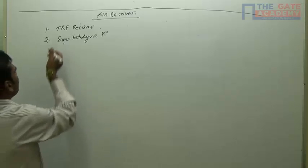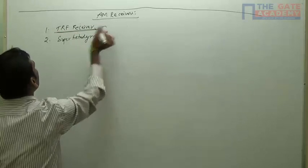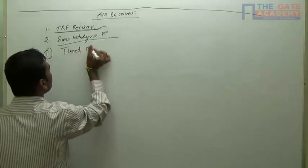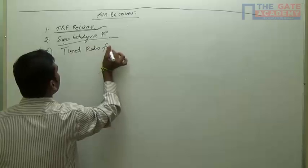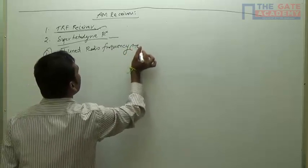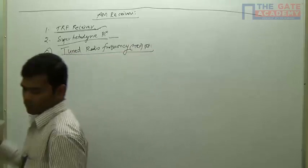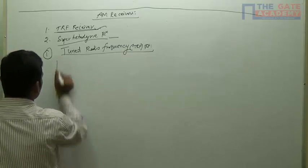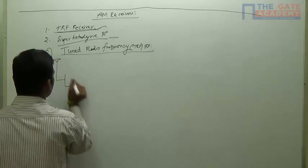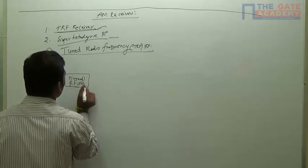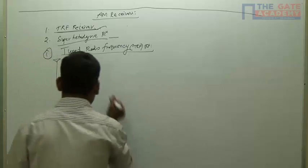We will see one by one. The first one - TRF, tuned radio frequency receiver. The first one: RF amplifier as usual, so this is nothing but a tuned circuit. I'm writing it as RF amplifier. Next is demodulator.